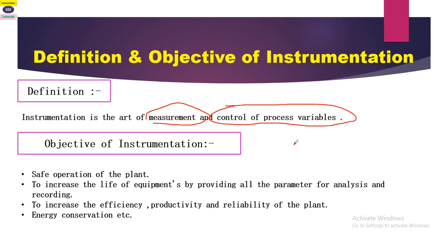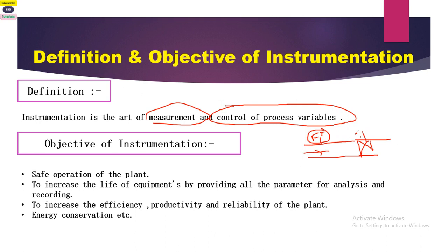Now we will understand what is measurement and what is control. When an FT (flow transmitter) is installed in a process line, it measures the flow in that line. There is also a valve — an FV (flow valve) — installed downstream of this FT.